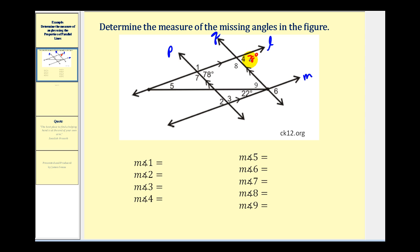Notice that the angle of seventy-eight degrees and angle eight form a linear pair, and therefore they're supplementary. So angle eight must be one hundred two degrees.